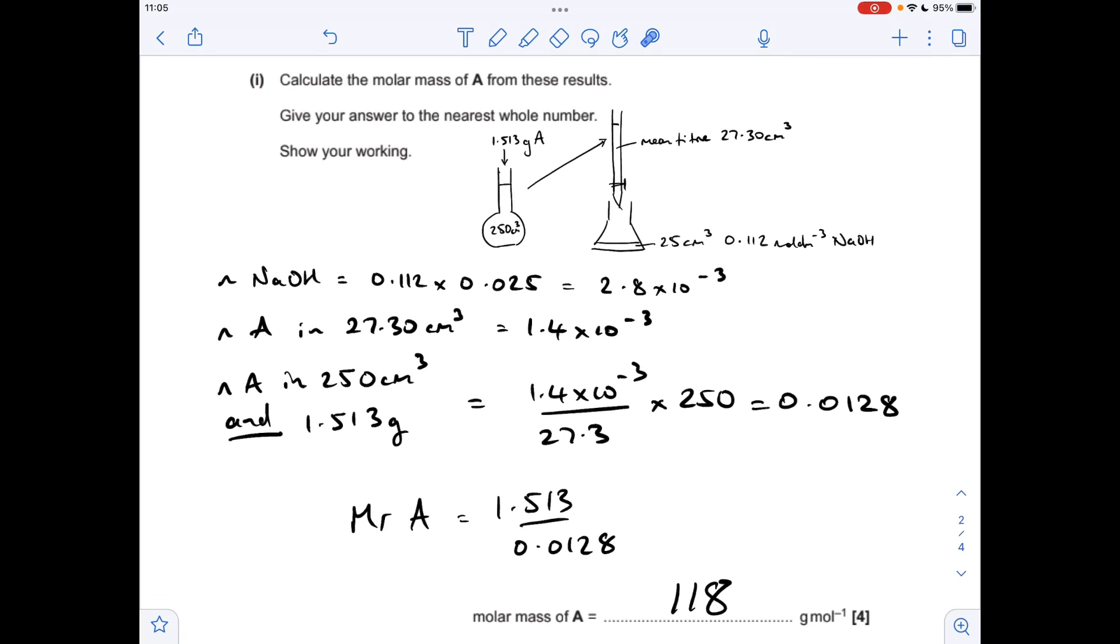Obviously to get the MR we take the mass, divide by those moles we've just calculated, and we've got to give the answer to the nearest whole number, 118 grams per mole.